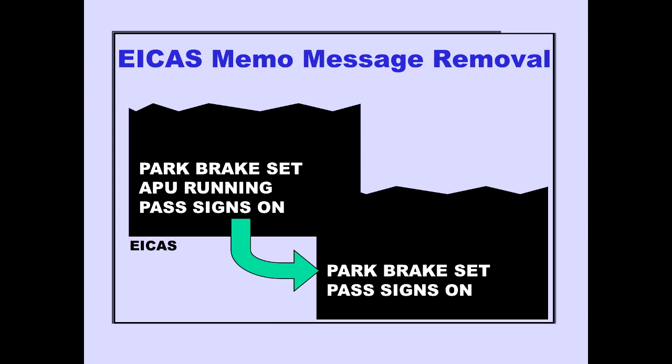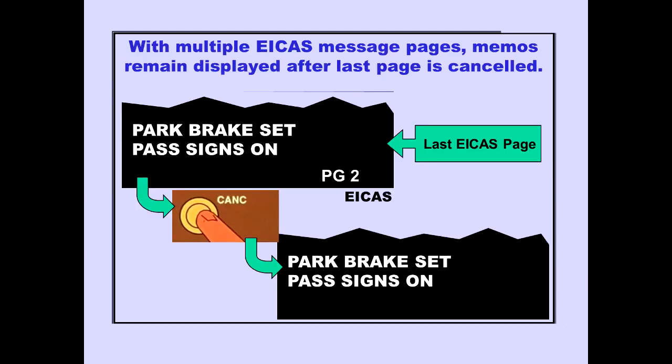When a memo message is no longer displayed, the remaining memo messages move down to fill the space, unlike ICAST warning, caution, and advisory messages which move up. When there are multiple pages of ICAST messages, all ICAST memo messages are displayed on the bottom of the last page. The memo messages remain displayed after the last page is displayed and the cancel switch is pushed.